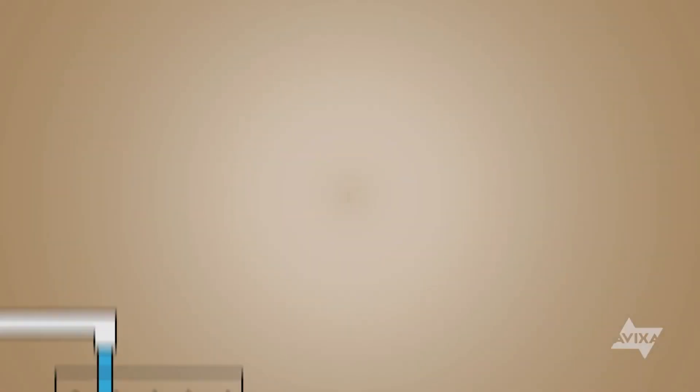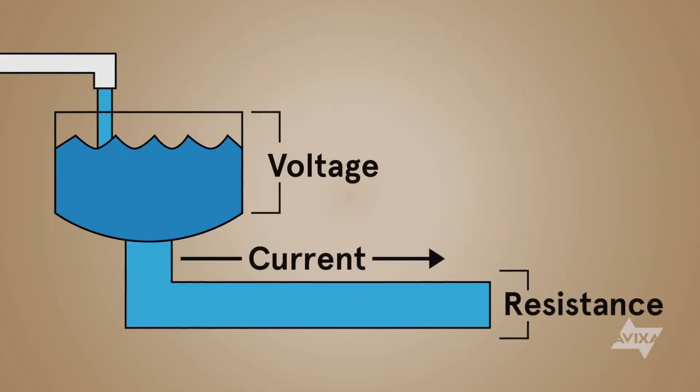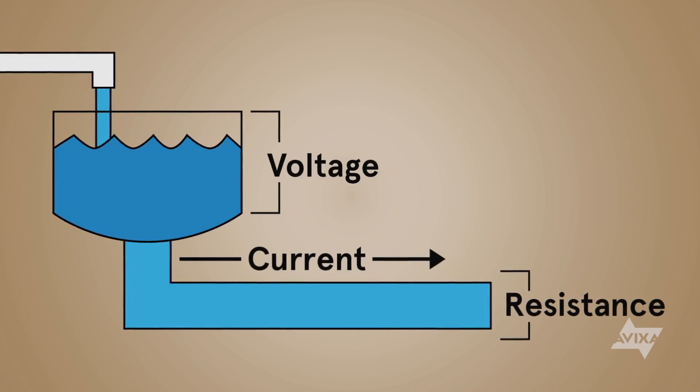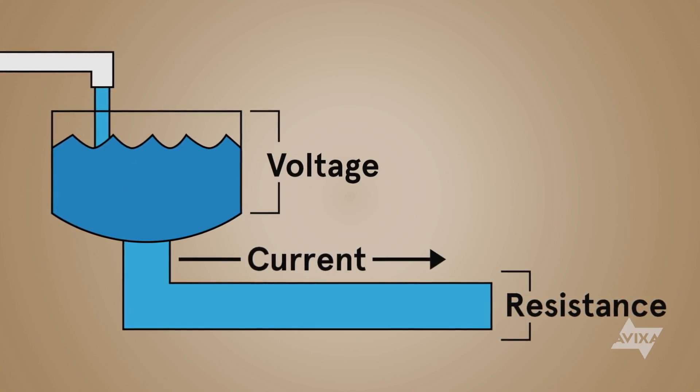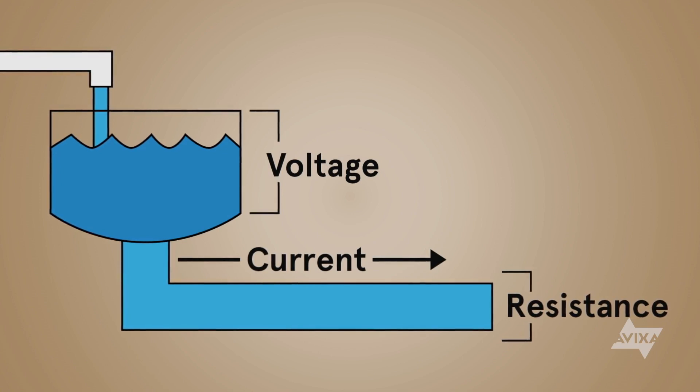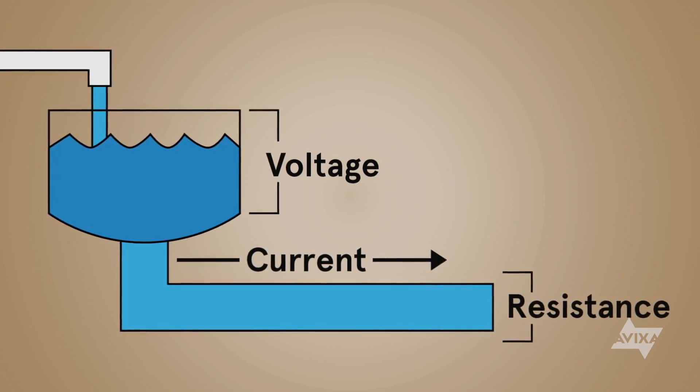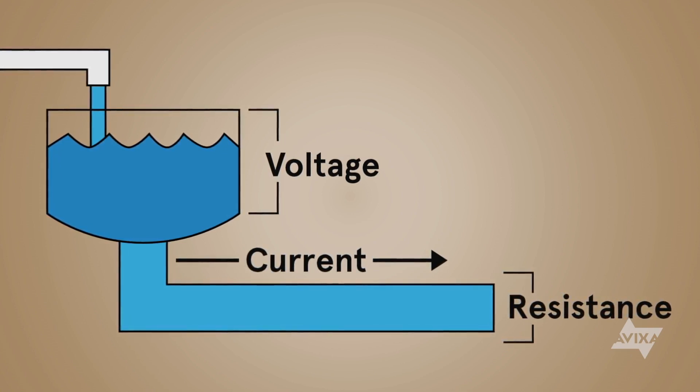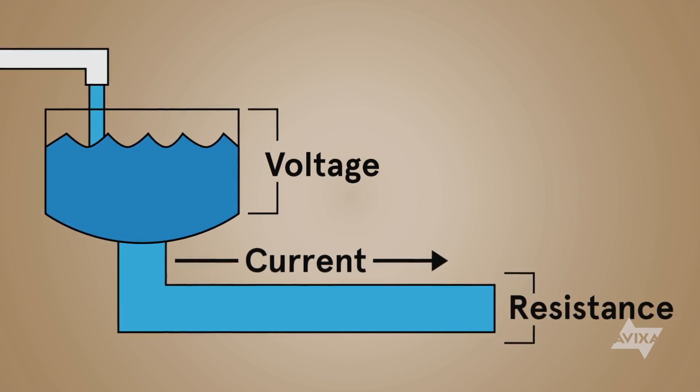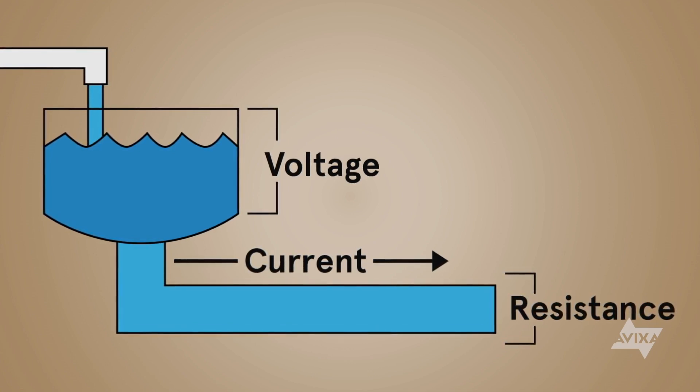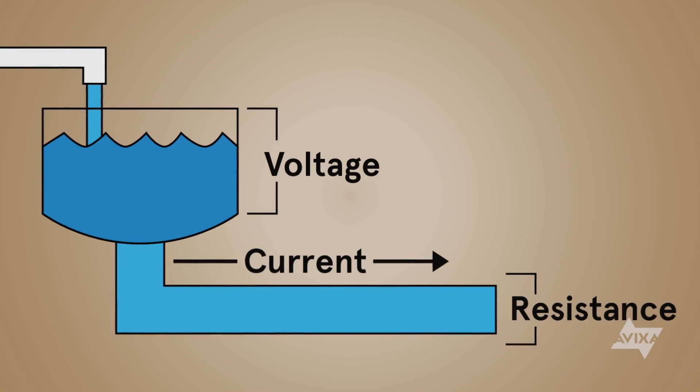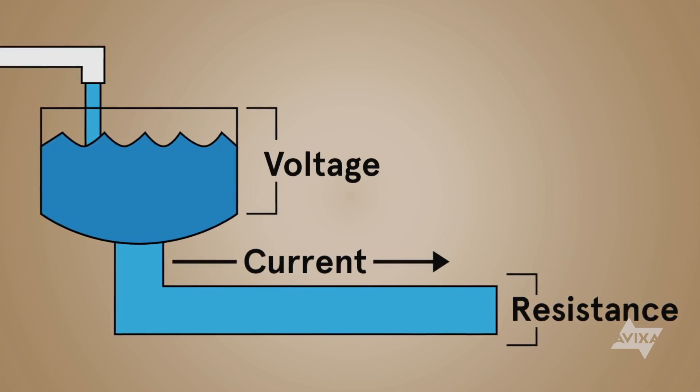Let's take a look at the analogy of a pump station. Here, gravity provides the force or voltage to move the water. The size of the pipe provides the resistance, so a smaller pipe would equal more resistance and a larger pipe would mean less resistance. And the flow of the water gives us the current. Notice, though, something is missing with this analogy. The water just flows right out of the pipe and falls straight to the ground, not returning to the source.